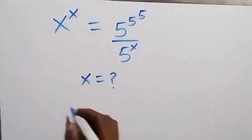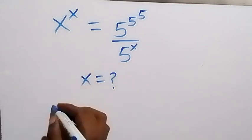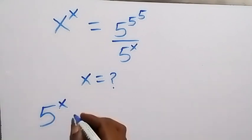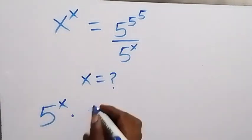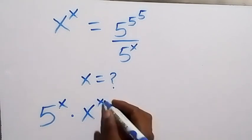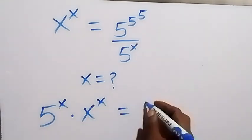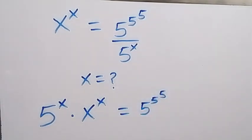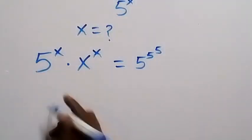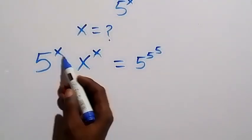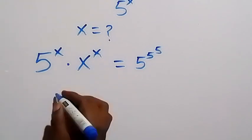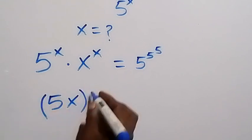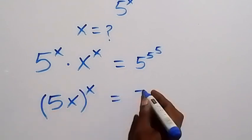From here, let's cross multiply. This will give us 5 to the power of x multiplied by x to the power of x on this side, equals 5 to the power of 5 then to the power of 5. From the law of indices, since these are the same base, we bring them together, giving us 5x together, now to the power of x.